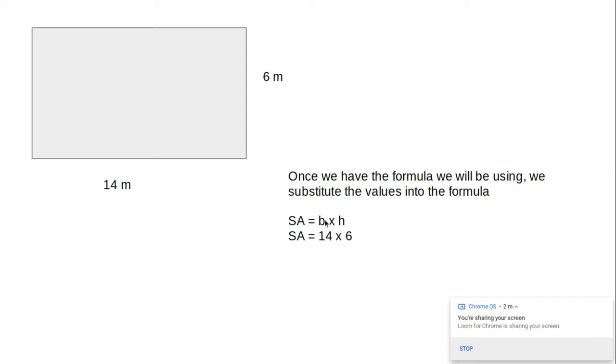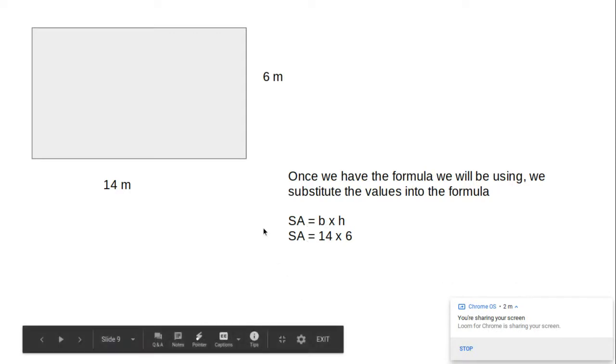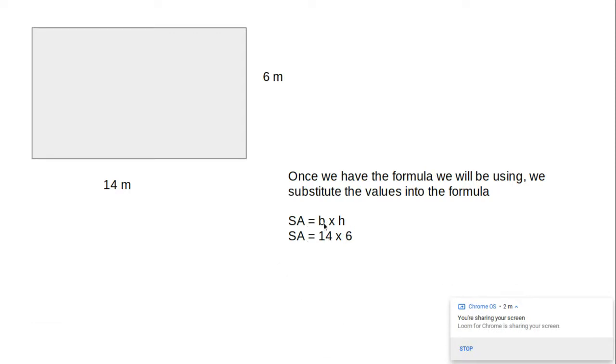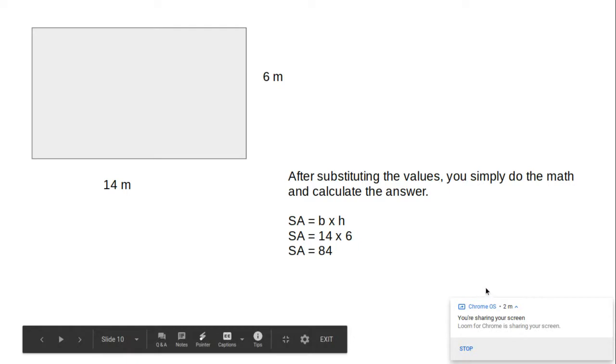Like I said, after stating the formula, base times height, basically you just multiply. You substitute in 14 for the base, 6 for the height. We multiply the values. We get 84.